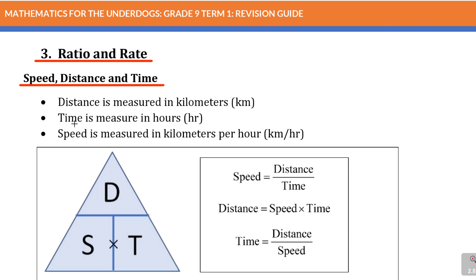Now let's start by looking at a few things here that we need to put in order: speed, distance and time. Distance is measured in kilometers. Time is measured in hours. Speed is kilometers per hour, which is this word per, meaning kilometers divided by hour.